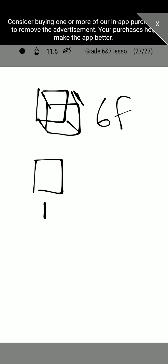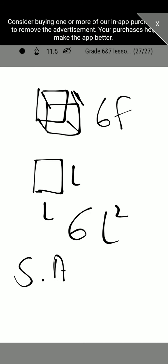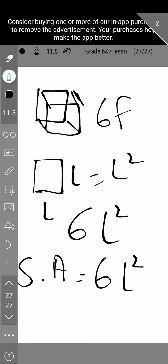Each face is in the shape of a square, and the area of a square is l multiplied by l. Since the cube has six faces, we find the area of all six faces, giving us 6l squared. We multiply by six because each face is a square with area l squared.